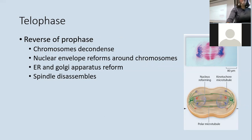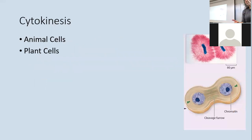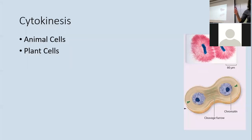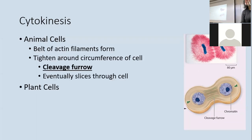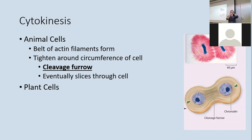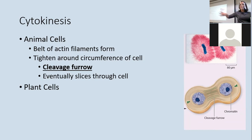After telophase comes cytokinesis — actually splitting into two cells. In animal cells, actin filaments form a belt called a cleavage furrow around the middle of the cell. The belt cinches tighter and tighter until it slices through the plasma membrane, producing two cells.